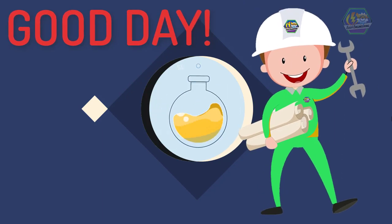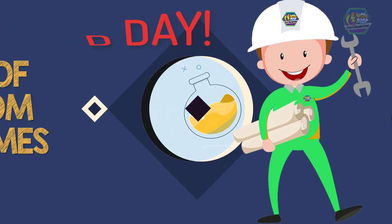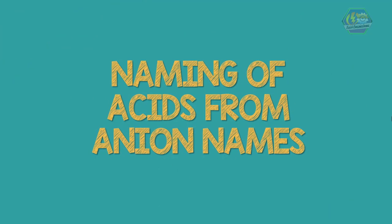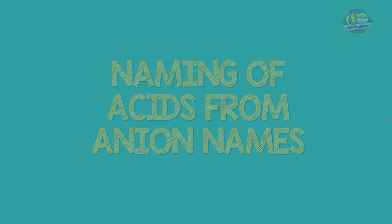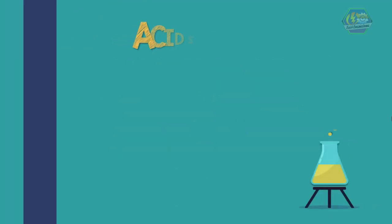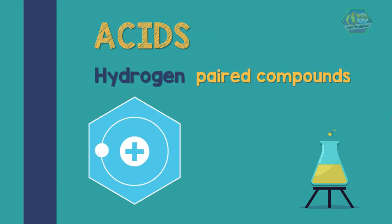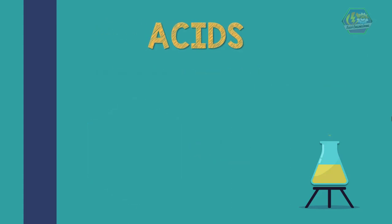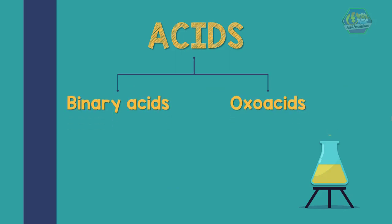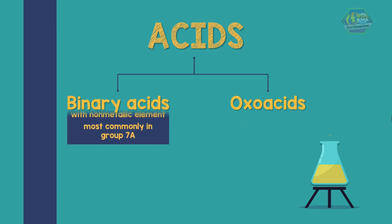Good day learners, this is Easy Engineering. This time we're going to talk about naming of acids from anion names. Acids are known to be hydrogen-paired compounds — the hydrogen bears a positive charge, so it is a cation. There are two common types of acids: binary acids and oxo acids.